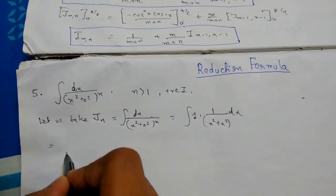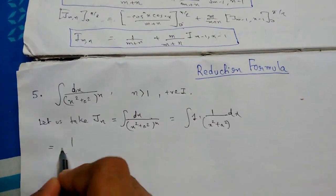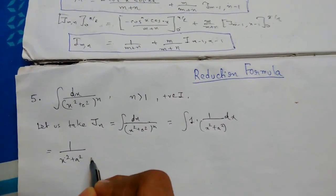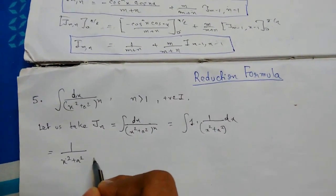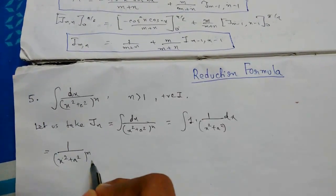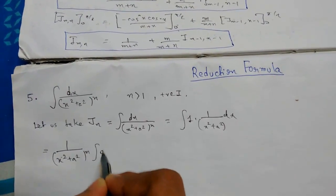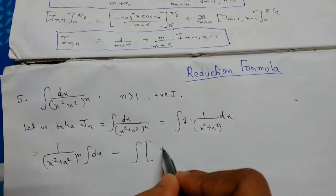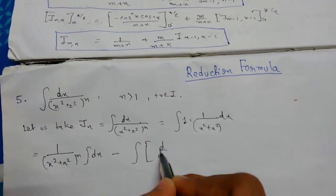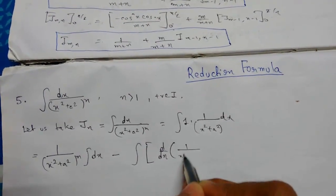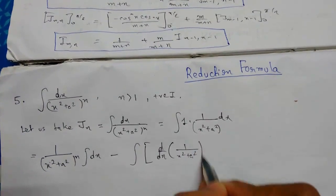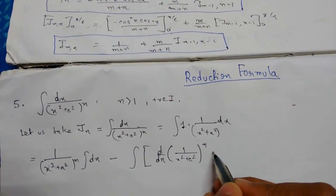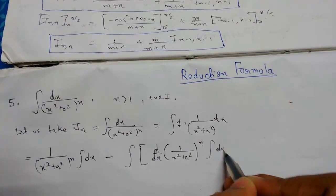Let me integrate it — this will be constant, whole to the power n. Now integration of dx, minus integration of d/dx of 1 upon (x² + a²)^n, and this will be the integration of dx.